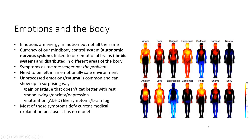Emotions are a form of energy — they're not just a feeling, they actually have a physical correlate in the body. They are energy in motion, but they're not all the same. They are the currency of our mind-body control system, otherwise known as the autonomic nervous system, which is linked to our emotional brain.